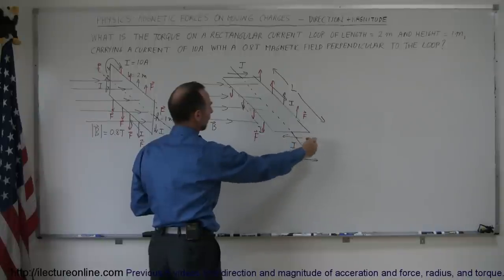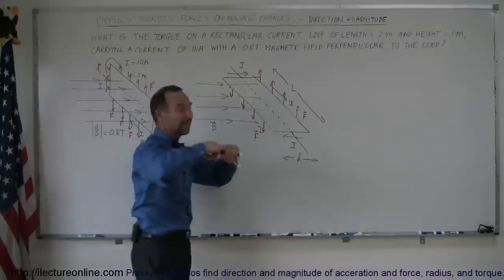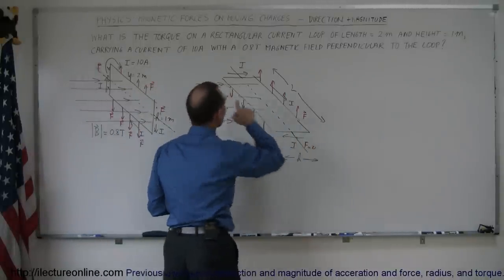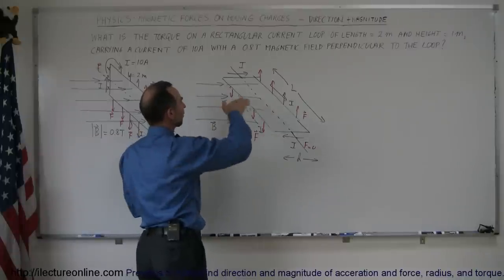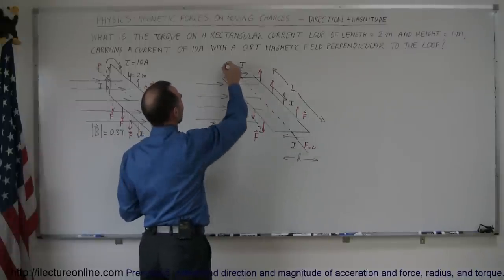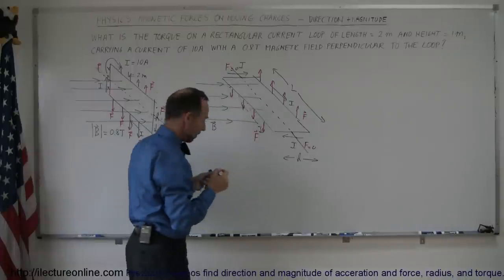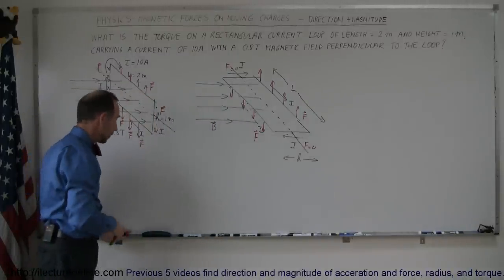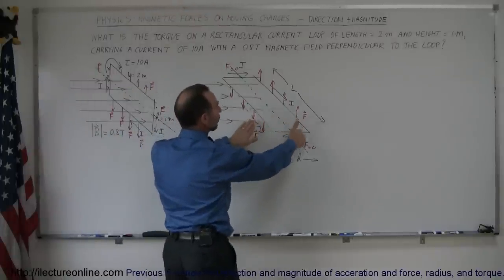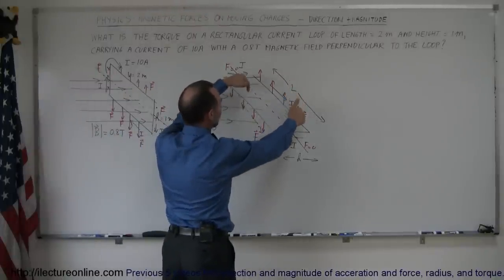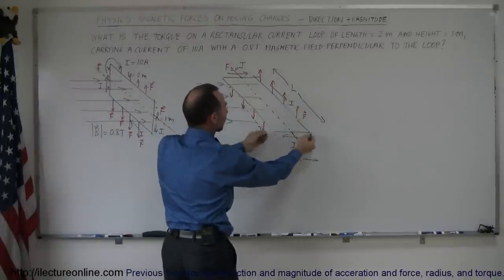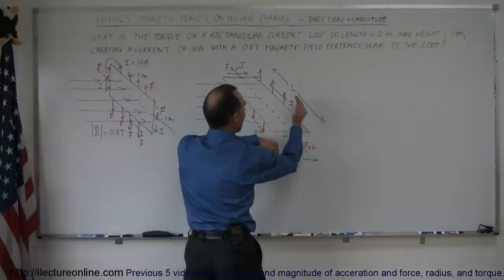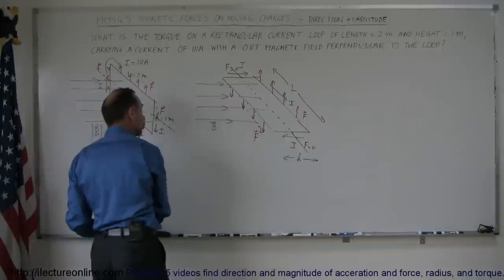On the back end section, since the loop is now laying flat, the current is in the opposite direction of the magnetic field — they are parallel to each other — so the force there is equal to zero. On the other end, the current is in the same direction as the B field, so the force is also equal to zero. Notice that we now have a torque situation: this end of the loop is being pulled upward, this end is being pushed downward, creating forces that will tend to turn the loop around.